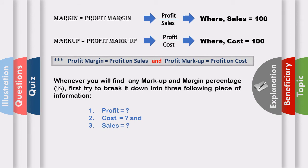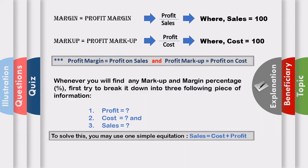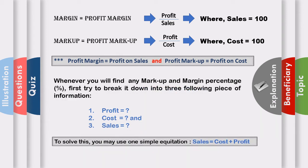Cost plus profit — that means sales is equal to cost plus profit. Sales is equal to cost plus profit. That is a useful equation. I am going to move to the next slide.